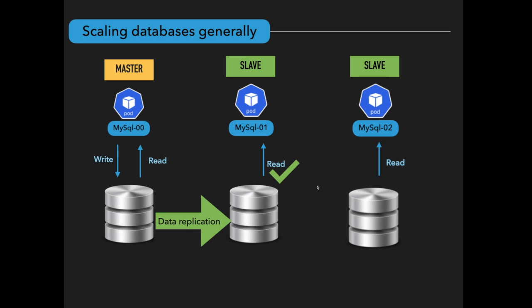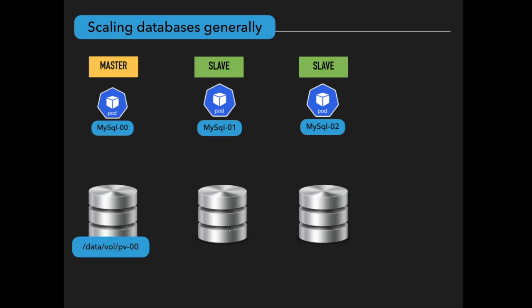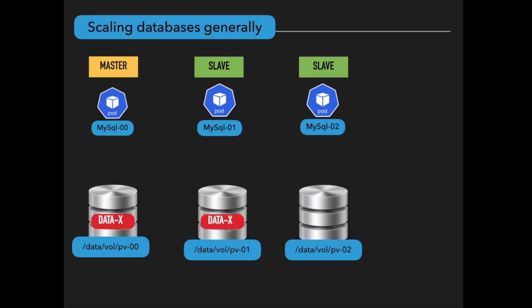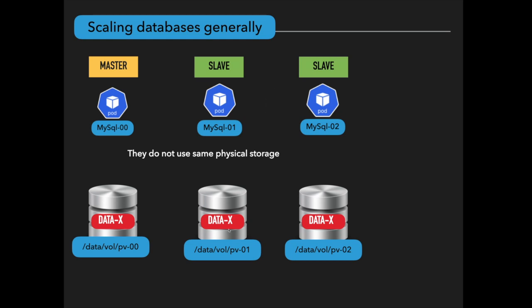The pods are not identical — we have one master pod and multiple slave pods. There is also a difference between slave pods in terms of storage. These pods do not have access to the same physical storage: even though they use the same data, they are not sharing the same physical storage. Each pod has its own replica of data storage and can access only its own data storage. This means that each pod replica must have the same data as the others at any time, so they have to synchronize data continuously.